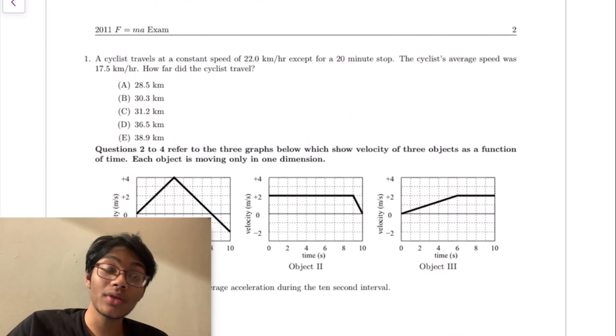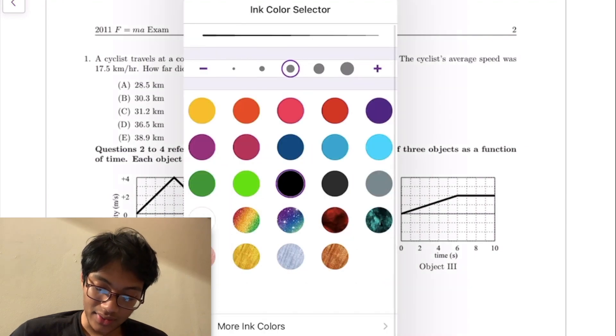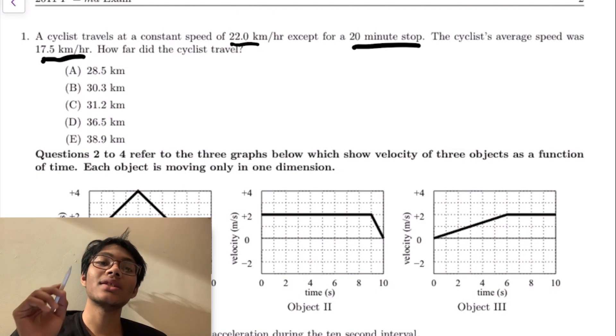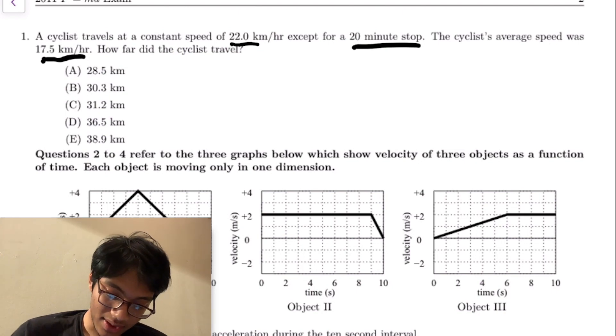A cyclist traveling at 22 kilometers per hour except for a 20 minute stop. So at some point during his journey, he stops for 20 minutes. His average speed was 17.5 kilometers per hour. What was his total distance traveled? Here's how I did this question.